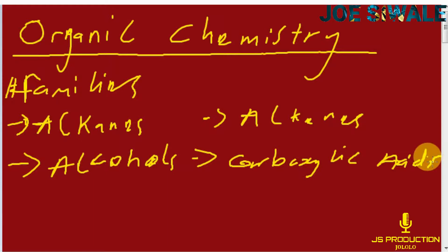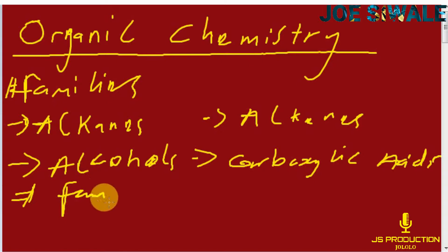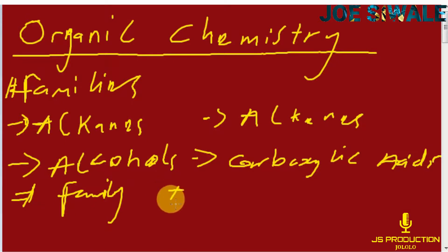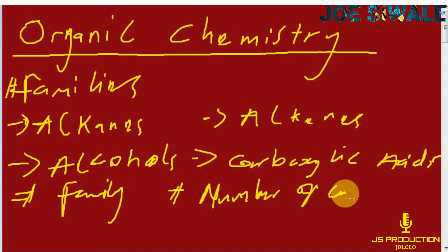Every time you see the name of an organic compound, it is going to tell you two things: the family to which it belongs, and the number of carbon atoms in it.